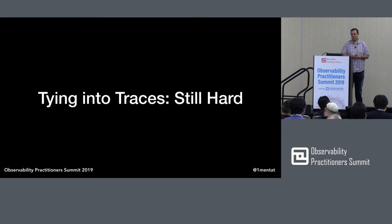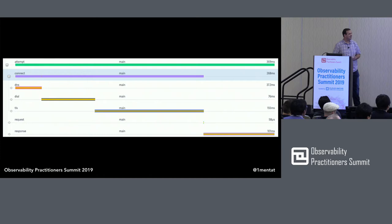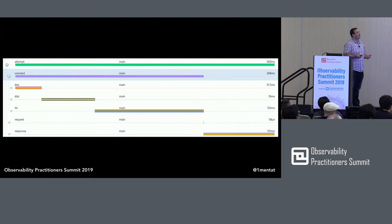But it was for X-Ray and not for OpenTracing. Luckily, open source, Apache license — I took an afternoon, ported it to OpenTracing, and I had more data. The data looks sort of like this: DNS, dial, TLS, request and response. And this actually made sense — what was going on.